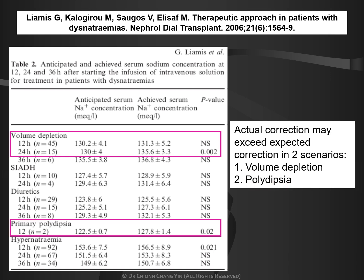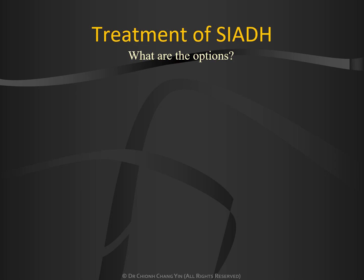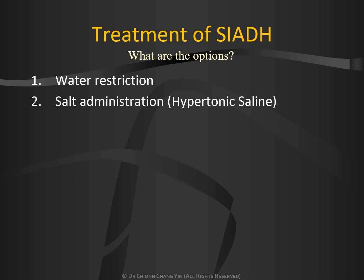In these clinical scenarios, we should focus on correcting the underlying causes of volume depletion and preventing further intake of free water. Regarding management of SIADH, the treatment options include: first and foremost, restricting further free water intake. In severe hyponatremia, we must administer salt, usually in the form of 3% sodium chloride. We must also increase the solute intake of the patient, as the maximum amount of free water excretion in the urine is dependent upon urine osmolytes.